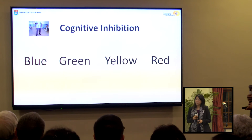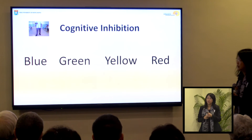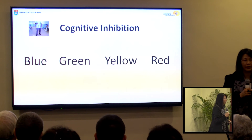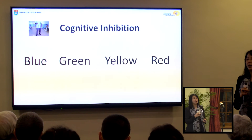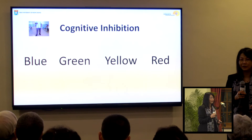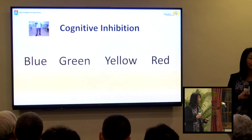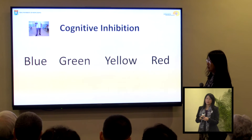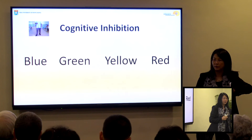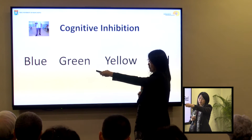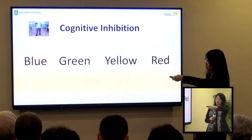Another example: a patient came to see me about five years post-stroke. She was very bright, and we flew together to Taiwan to do the scanning since there was no functional MRI scanner available in Hong Kong at the time. In the scanner, I asked her to perform a cognitive inhibition task — what we call the Stroop task. First I asked her to simply say the color words: blue, green, yellow, red.